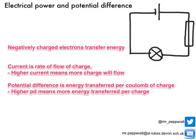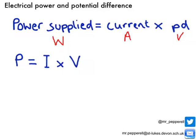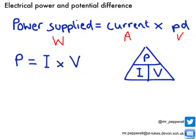We know that energy is related to power. So by multiplying the rate of flow of charge — the current — by the amount of energy each coulomb of charge is transferring — the potential difference — we can work out the power supplied to a device. Power is measured in watts, current in amps, and potential difference in volts. We can summarize that equation simply as P equals I multiplied by V. I can also rearrange it using the triangle — for example, covering up voltage gives power divided by current.